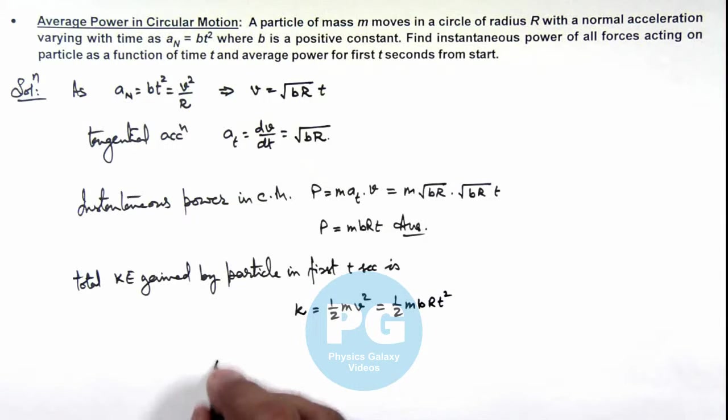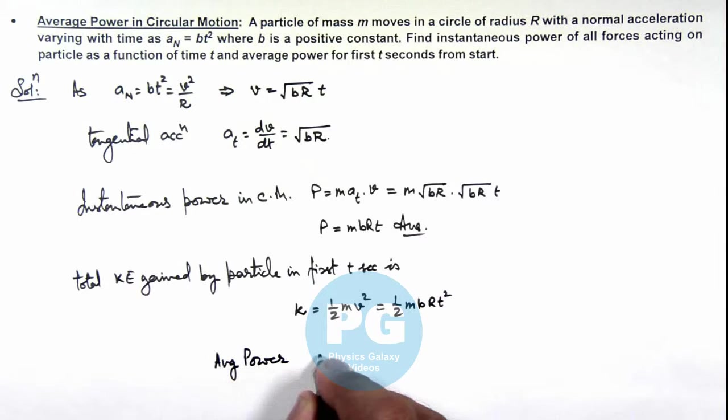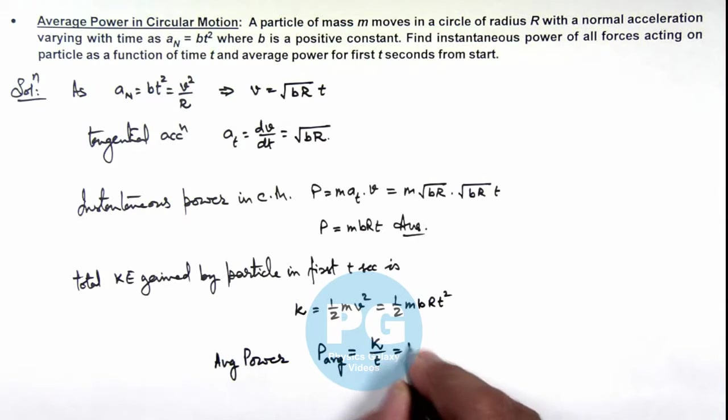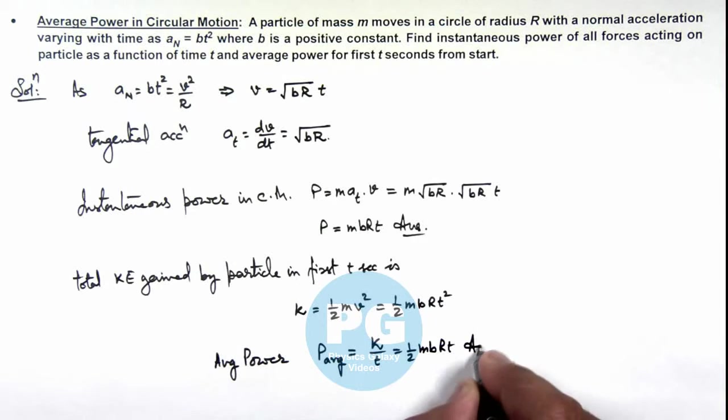So average power for first t seconds can be given as P_average equals gain kinetic energy by time, so this will be half m·b·R·t. This is another result of the problem.